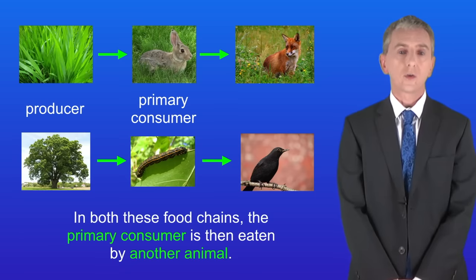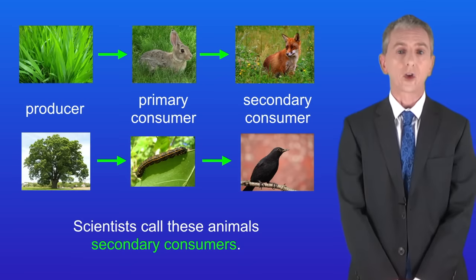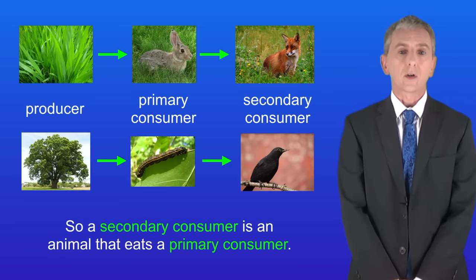As you can see in both these food chains the primary consumer is then eaten by another animal. Scientists call these animals secondary consumers. So a secondary consumer is an animal that eats a primary consumer.